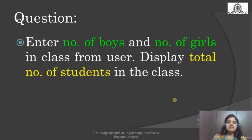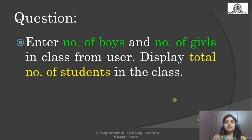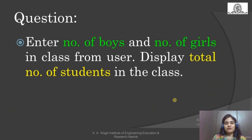Run time question: enter number of boys and number of girls in class from user, display total number of students in class. You will use input for entering number of boys and number of girls, then simply use the addition operation and print the result. First try this by your own, then see the solution.